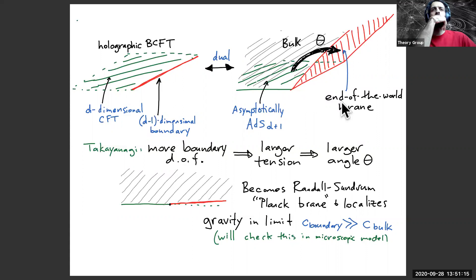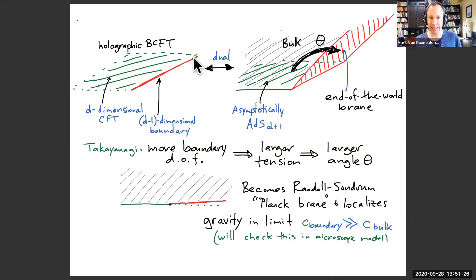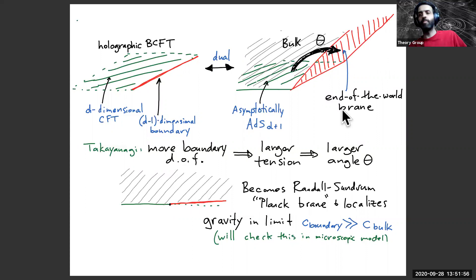Question: What was it in the original CFT state that fixed the tension? Answer: Starting with a bulk CFT, we have a choice of boundary physics — boundary conditions for our bulk CFT fields, and extra degrees of freedom coupled in. This theory is characterized by a bulk central charge and a boundary central charge, and this boundary central charge is the thing that corresponds to the tension. You fix the choice of boundary conditions and then still integrate over the fields on that boundary.